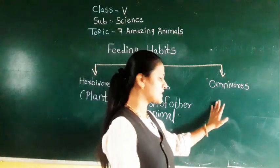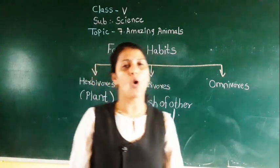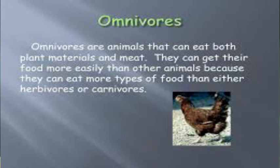The next type of feeding habit is omnivorous. Omnivorous animals eat both plants as well as other animals. They are called omnivorous. For example, human beings, bear, and crow come under omnivorous animals.